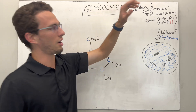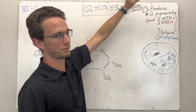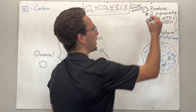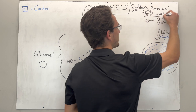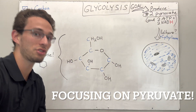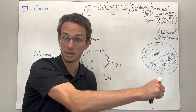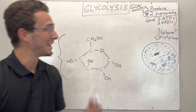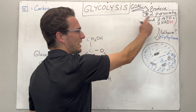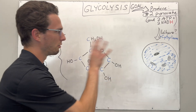Glycolysis is a process and the goal of the process is to produce a few molecules, primarily two pyruvate molecules. You've learned in the last video for the citric acid cycle that pyruvate enters the citric acid cycle to produce a lot of molecules that help us make energy — very important intermediates. In the same process of glycolysis we're also going to make some ATP and some NADH.